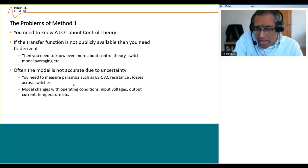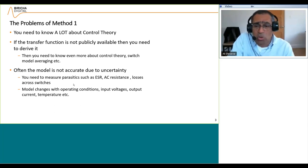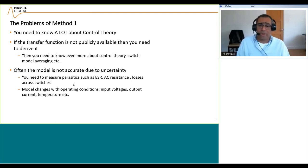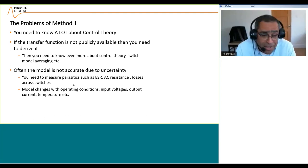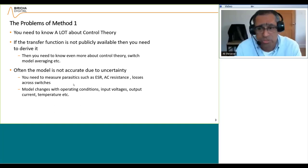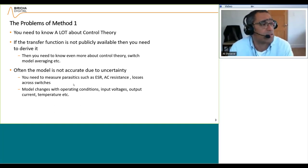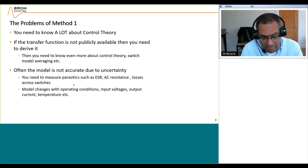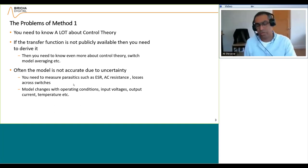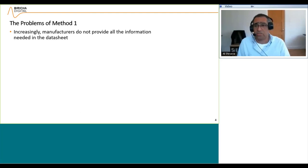A big problem is that the model many times is not very accurate because of uncertainty. You need to measure parasitics such as ESR, AC resistance, and losses across the switches. The model also changes with operating conditions, with aging, with temperature, with input voltage, output current, and all sorts of things. So you drift out of the mathematical elegance of an equation and into the real world, which very often is not the same as the mathematical model.